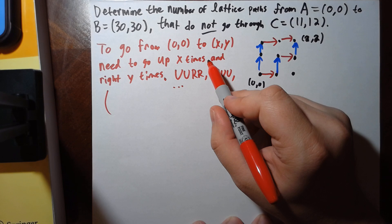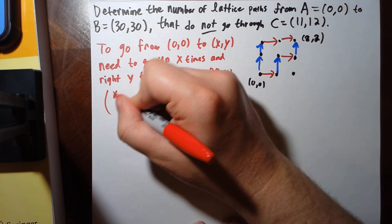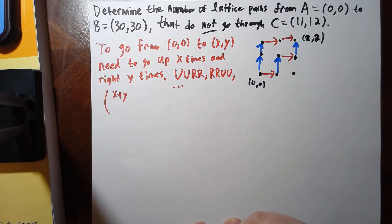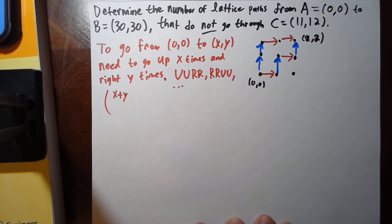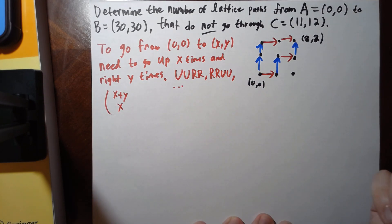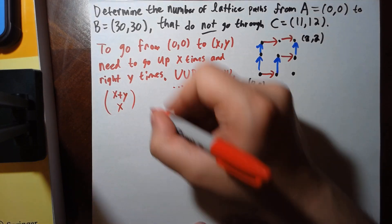Well, you have x plus y, because you're moving a total of four times. Because going right increases one of them by one, going up increases the other one by one, and you have to get to x plus y. But you have to choose, say, x rights. So there are (x+y choose x) paths.